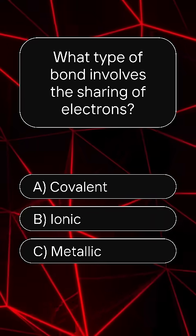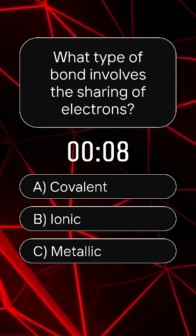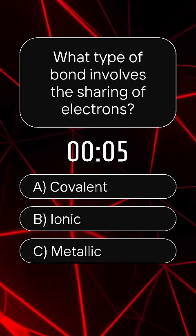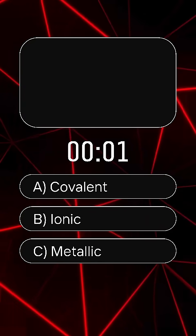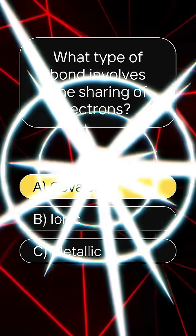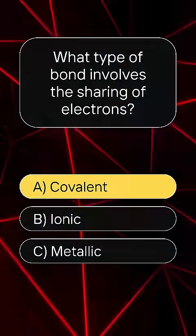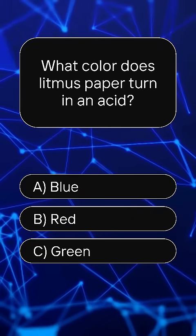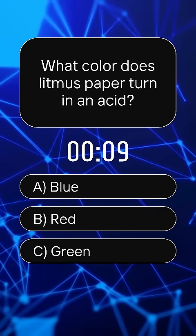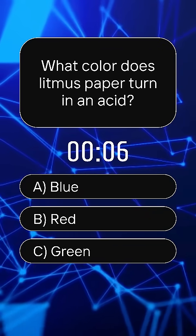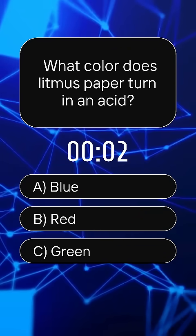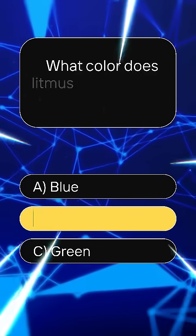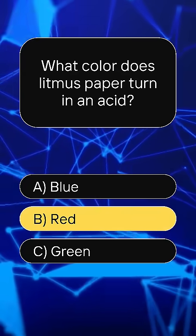What type of bond involves the sharing of electrons? Answer: A, covalent. What color does litmus paper turn in an acid? Answer: B, red.